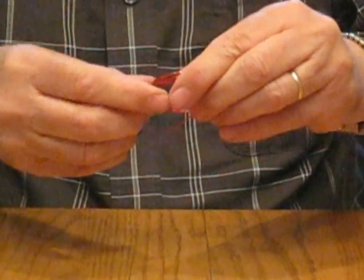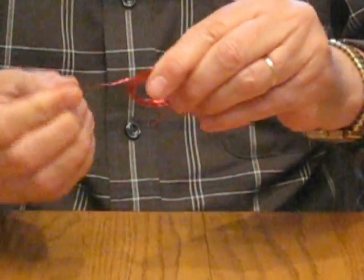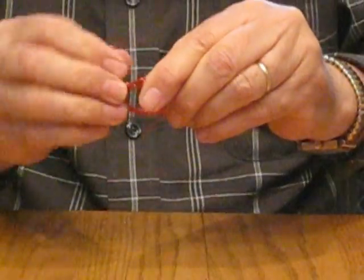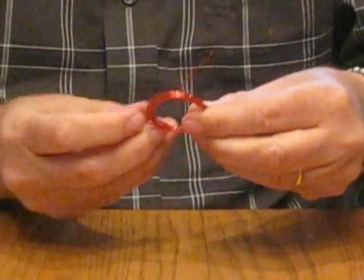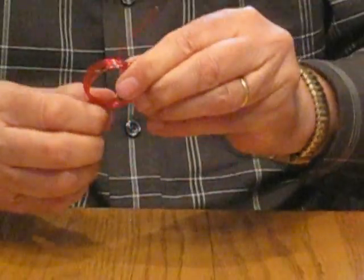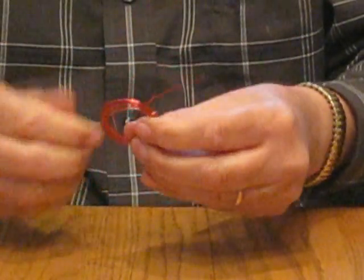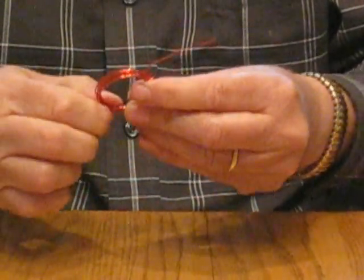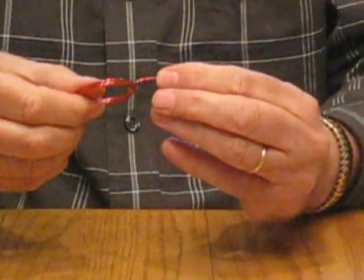Now, what we need to do is take the ends and wrap them around to hold the wire in place. And we want the wire that's sticking out on the ends to be opposite, 180 degrees apart like that.